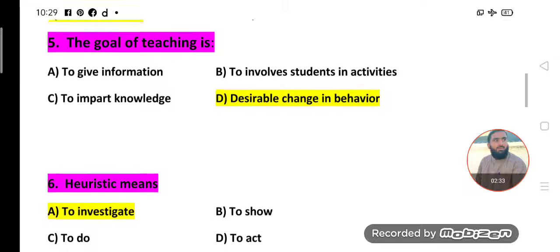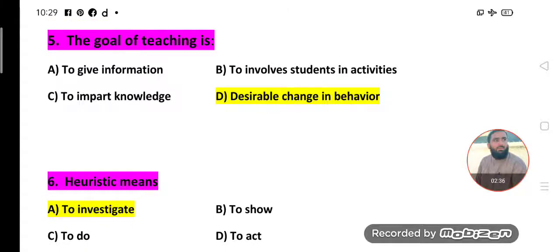MCQs number five. The goal of teaching is: To give information, To involve students in activities, To impart knowledge. Option D is the correct option - Desirable change in behavior. Yes, through teaching we are giving information, involving students in activities, and imparting knowledge. But the basic purpose of teaching is learning. Learning means change in behavior. So desirable change in behavior is the basic, the chief goal of teaching - to bring desirable change in students' behaviors.